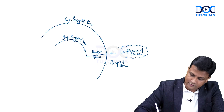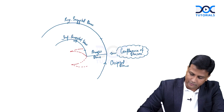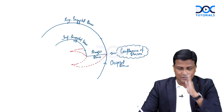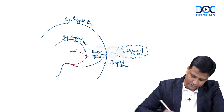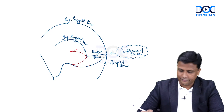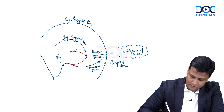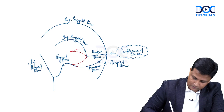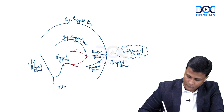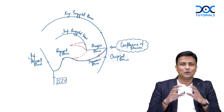Once the blood arrives at the confluence, it drains away via the transverse sinus. I'll draw this in a slightly 3D view. The transverse sinus takes a turn becoming the sigmoid sinus, which then combines with the inferior petrosal sinus to form the internal jugular vein. Sigmoid sinus and inferior petrosal sinus combine together to form the internal jugular vein — extremely important.